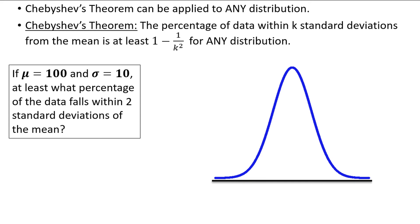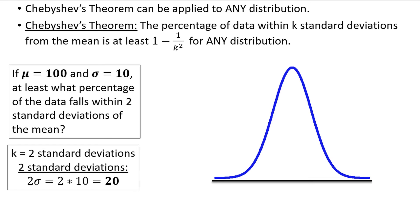Remember, the standard deviation is a measurement of the spread of data. Think of this standard deviation as a unit, and we need two of them. 2 times 10 is equal to 20, so two standard deviations are equal to 20 in this case. Also k is equal to 2, since we define k as the number of standard deviations away from the mean in Chebyshev's theorem.